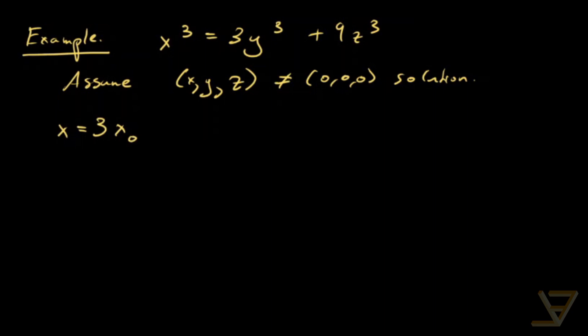What that then tells us is that by substitution, 27x_0 cubed is equal to 3y cubed plus 9z cubed. And now we divide out to get 9x_0 cubed is equal to y cubed plus 3z cubed.